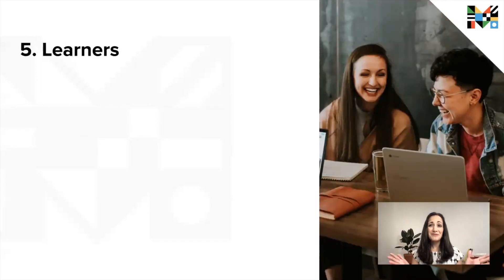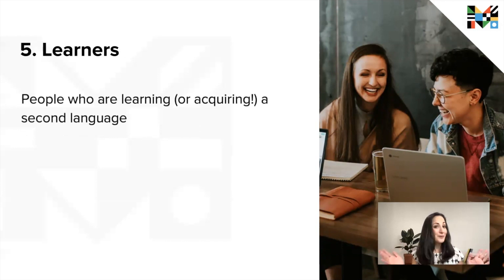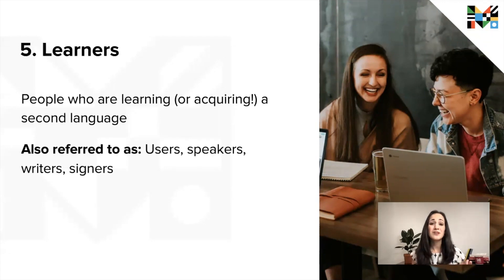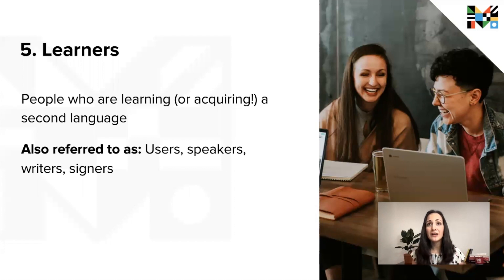Now we've covered SLA and its component parts. For term number five, let's talk about people. People who are learning or acquiring second languages are referred to as second language learners. The truth is that second language learning is in many cases a lifelong process, and even people who have been learning a second language for many years may still consider themselves learners. You may also hear these individuals referred to as users, speakers, writers, or signers — terminology that places less emphasis on acquiring a language and more on actually doing something with it.